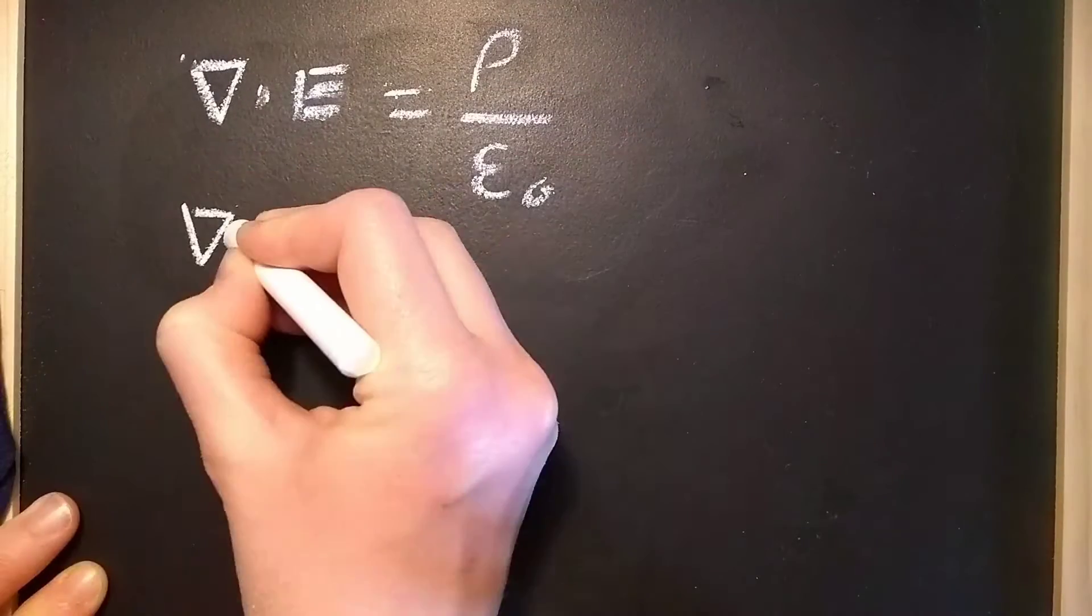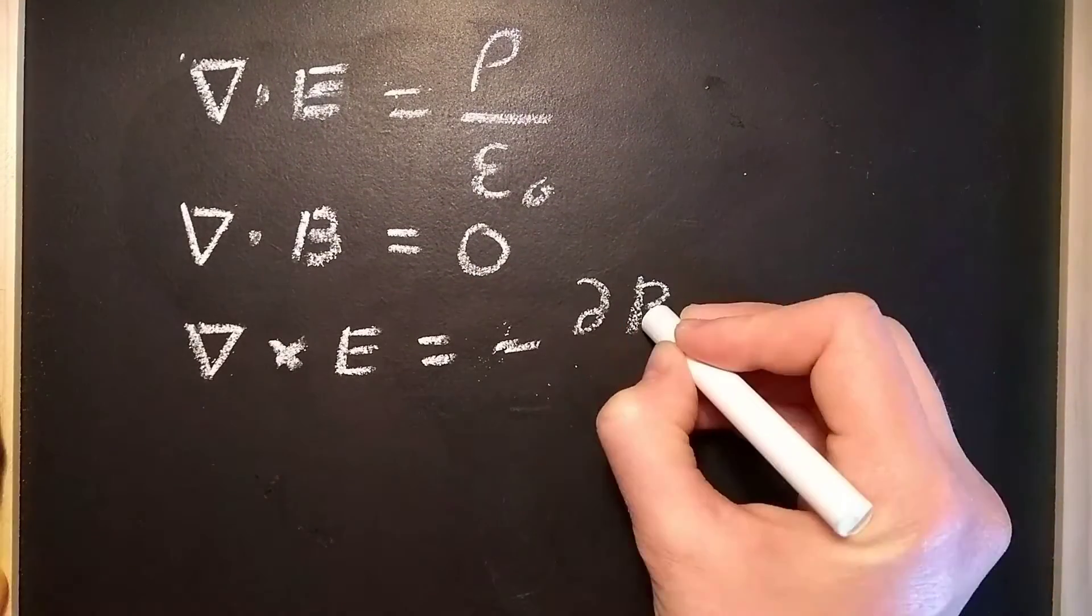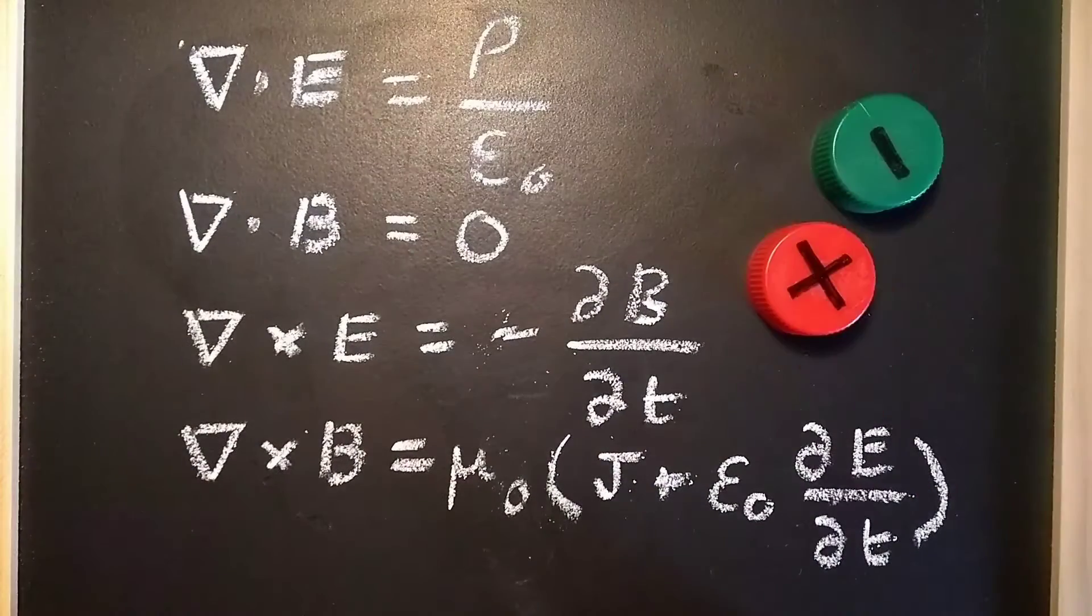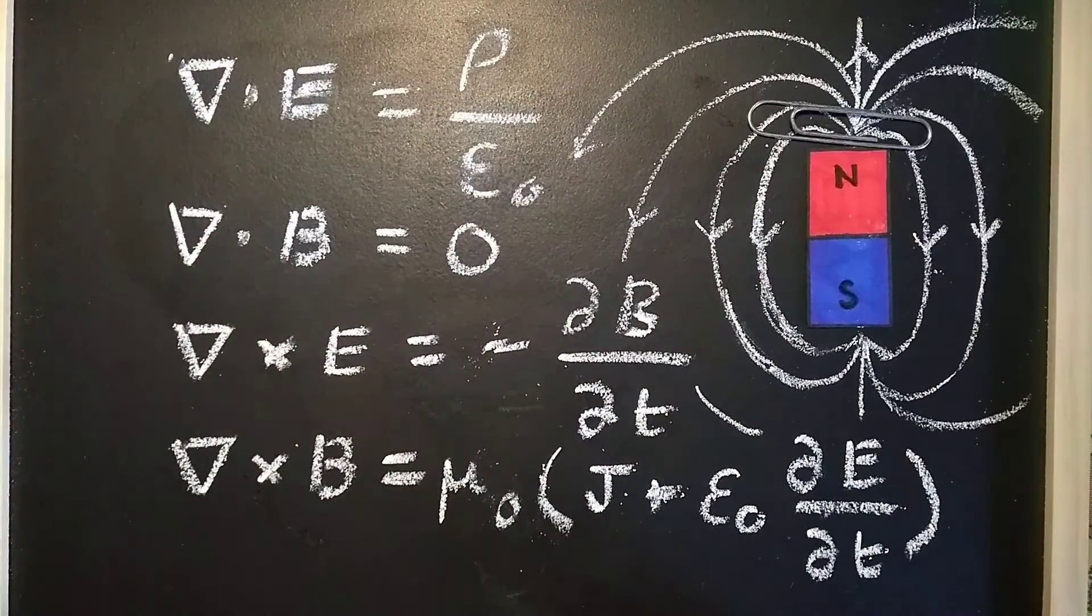But most famously of all are Maxwell's equations. These laws explain how opposite charges attract and like charges repel, and why magnets always have two poles.